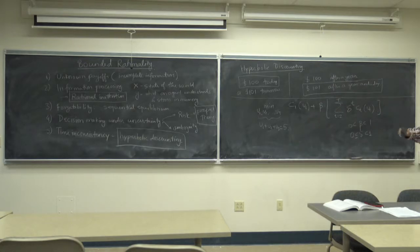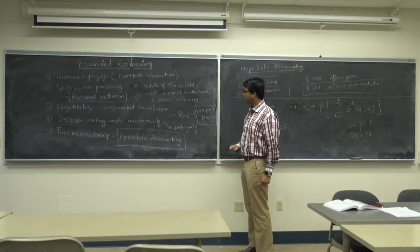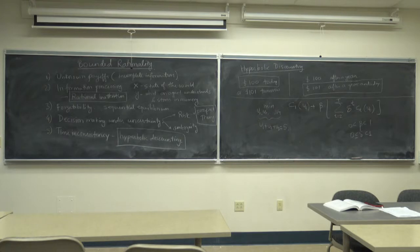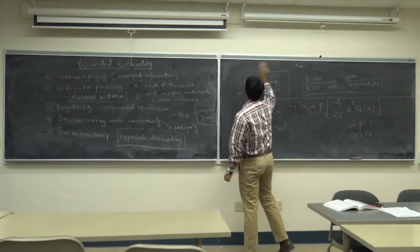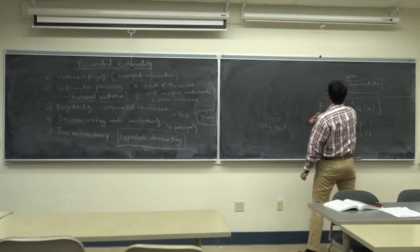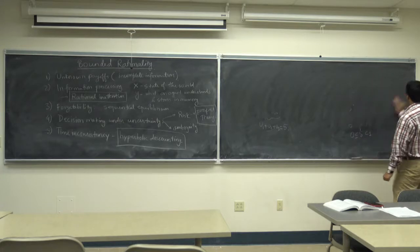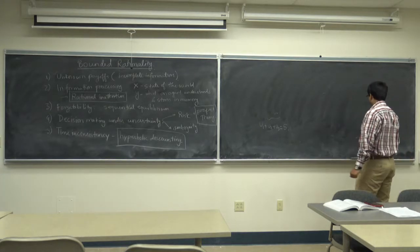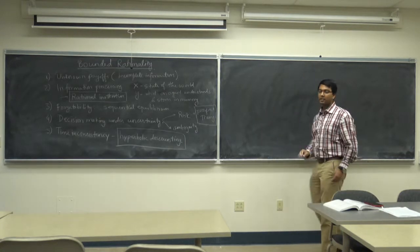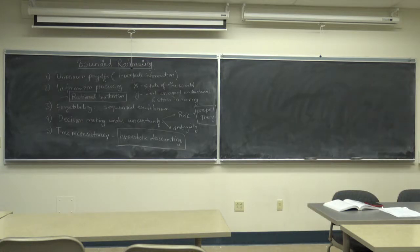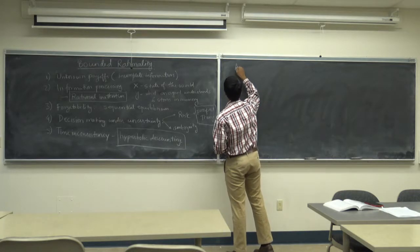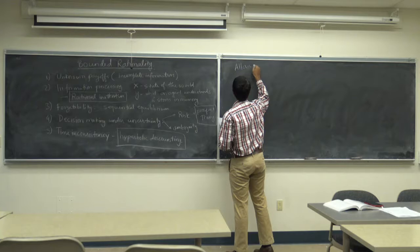Now I want to focus the rest of the class on prospect theory. Since this is the last class in game theory, let me connect it to the first class where we talked about preferences and how they result in utility functions. Let's talk about simple lotteries and the Allais Paradox.